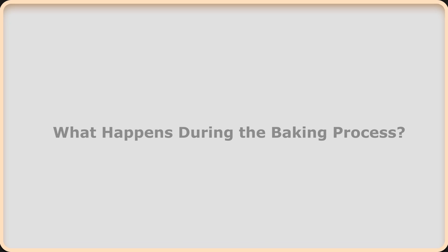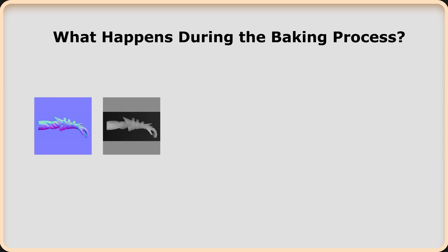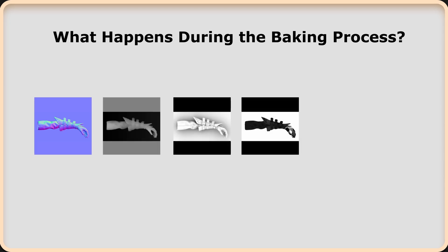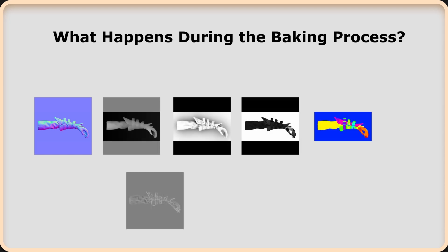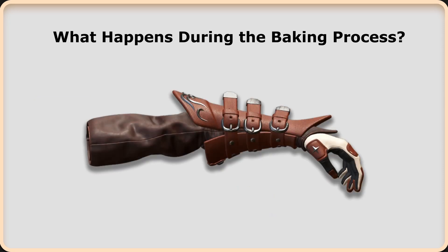What happens during the baking process? By creating channels such as normal map, displacement map, ambient occlusion, thickness, ID map, curvature, and position, the aim is to achieve detailed visuals on low polygon models.